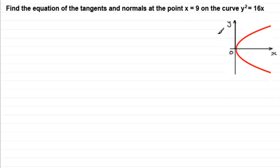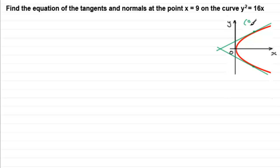At the point where x equals 9, there's going to be more than one point. If we go along the x-axis to where x is 9, there's going to be a point up here and a point straight down below it. They would actually cross because of the symmetry on the x-axis. But what we don't have is the corresponding y-coordinate, so that's what I'd want to find first.